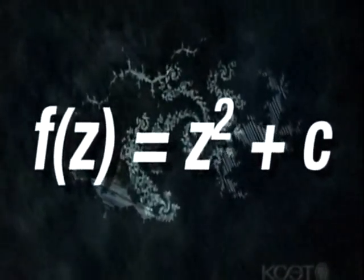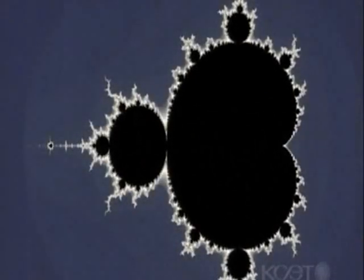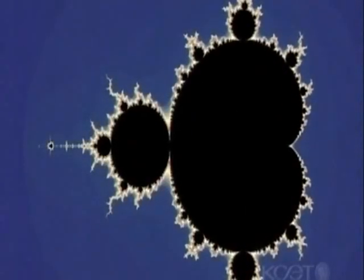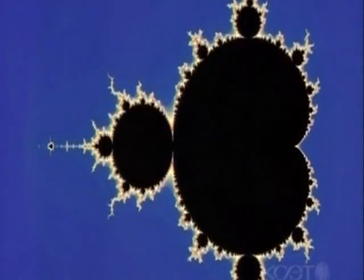Those images led Mandelbrot to a breakthrough. In 1980, he created an equation of his own, one that combined all of the Julia sets into a single image. When Mandelbrot iterated his equation, he got his own set of numbers. Graphed on a computer, it was a kind of road map of all the Julia sets and quickly became famous as the emblem of fractal geometry. The Mandelbrot set.